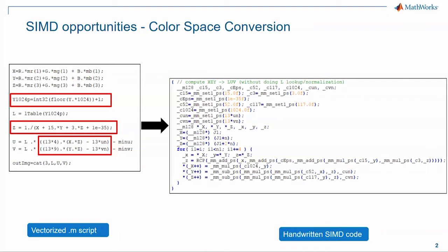These SIMD operations can actually speed things up a lot. For this particular example, by using the SIMD intrinsics in the C code, when you compare this version of the C code with the SIMD intrinsics to the other version of the C code without the SIMD, the speedup can be up to 16 times. So it's a very big jump.